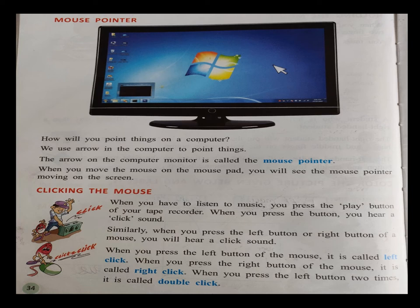Now let's learn about clicking the mouse. When you want to listen to music, you press the play button of your tape recorder and you hear a click noise. Similarly, when you press the left button or the right button of a mouse, you will hear a click sound.